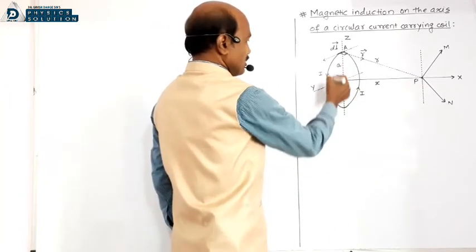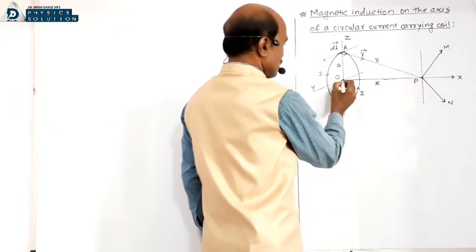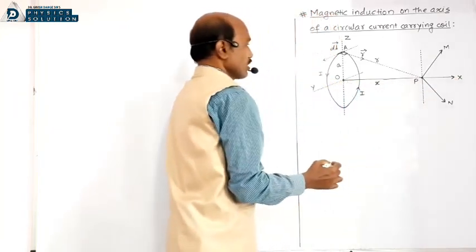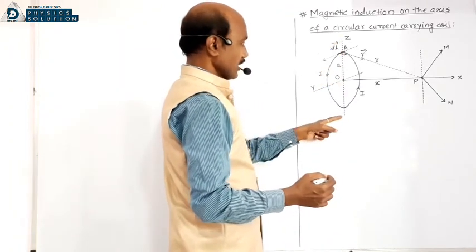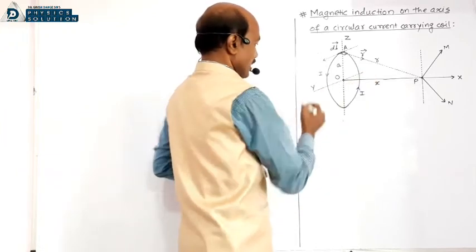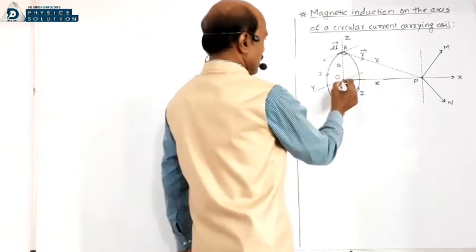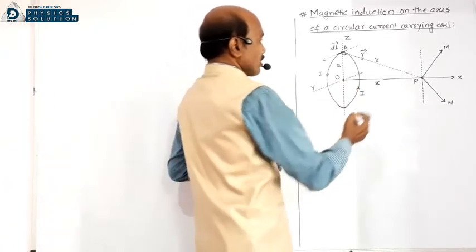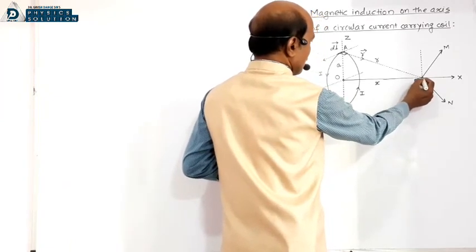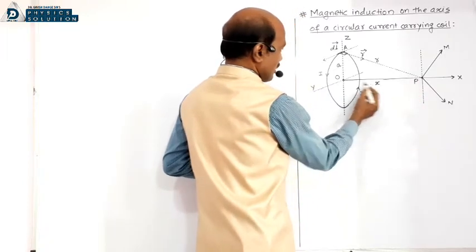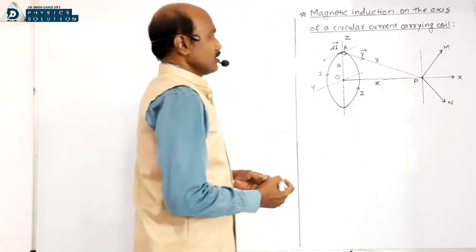O is the center of this circular loop. Consider the x-axis passing through the center of the circular loop. Perpendicular to x-axis there is z-axis vertically directed, and y-axis, so x-axis, y-axis, and z-axis are mutually perpendicular at the origin. Now consider point P, at a distance x from the center of this circular loop — OP distance is along the x-axis.